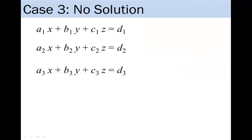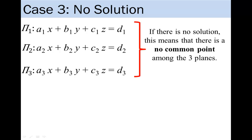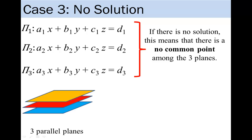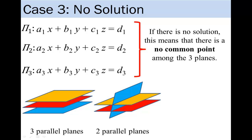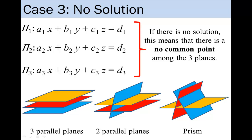In case 3, suppose that there is no solution to this system of linear equations. Thinking of these three equations as planes, this means that the three planes do not all meet at a common point. This can be illustrated in how the planes are oriented in the diagrams below. In this case, the three planes may be oriented either parallel to each other, or the three planes may form a prism.